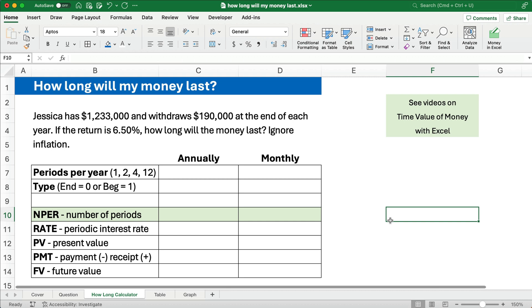I think I can solve your issues for you. So I've just restated the problem. Jessica has $1,233,000 withdrawals $190,000 at the end of each year when the return is 6.5%. How long will the money last? And we're going to ignore inflation.